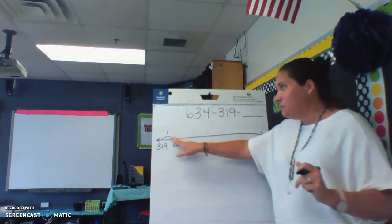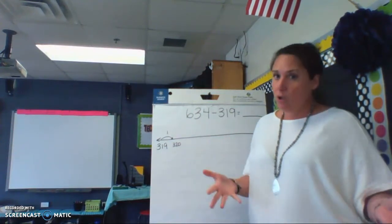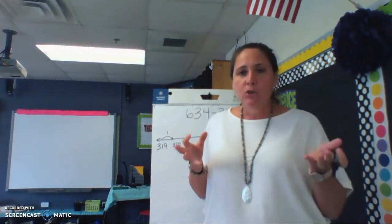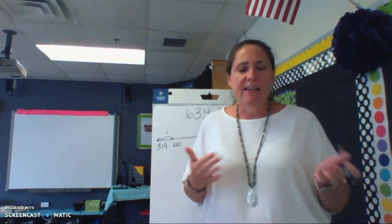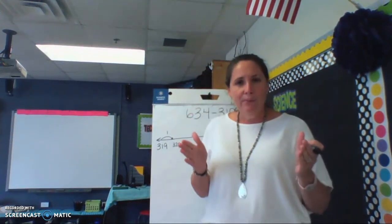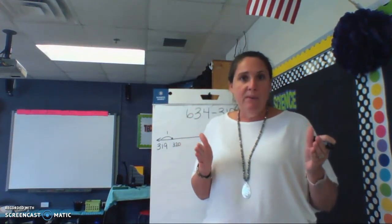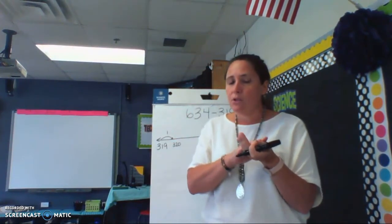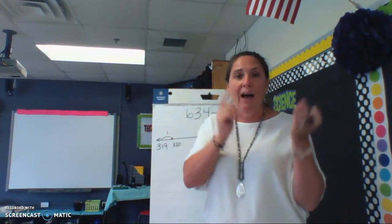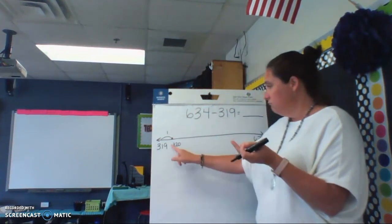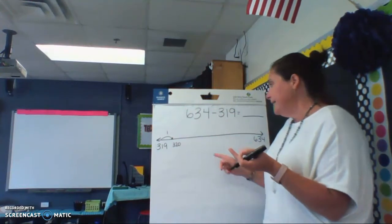So I can see that I could keep doing small hops, I could, but remember we've talked about last week how we want to make sure that our strategy is clear and concise. That means if someone were to look at your paper, at what you're doing, they would be able to figure it out, and you would have the least amount of steps so that way you wouldn't be confused. So I'm going to jump some hundreds, because I'm going to go from 300 all the way to 600.